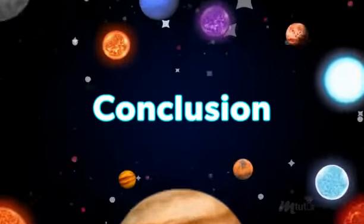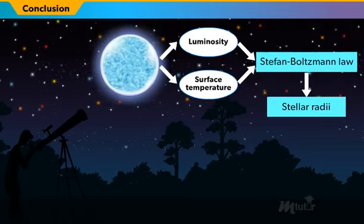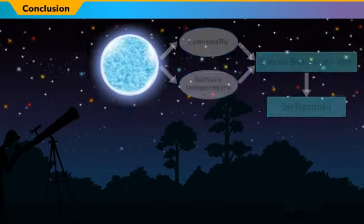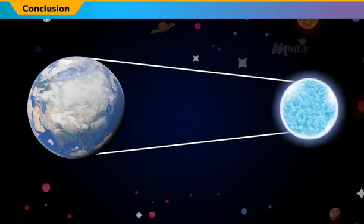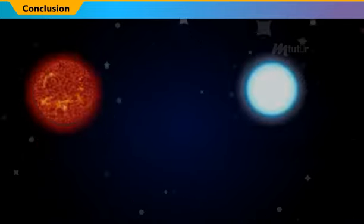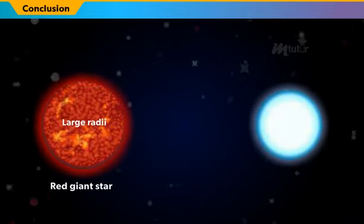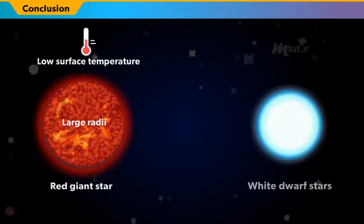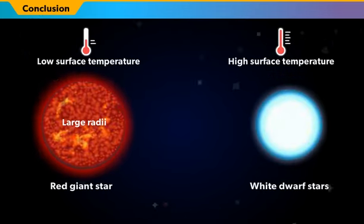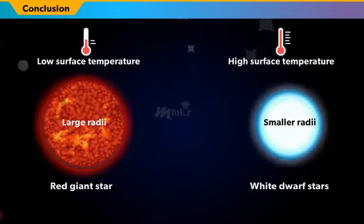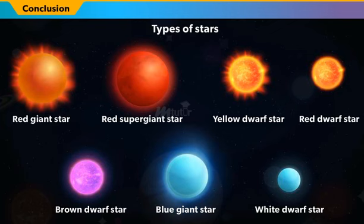Conclusion. Astronomers measure stellar radii to determine the size of a star, which may be millions of light-years away from Earth. Red giant stars have large radii and low surface temperatures, and white dwarf stars have high surface temperatures and small radii. So, the different colors and sizes of stars are based on their radius and surface temperature.